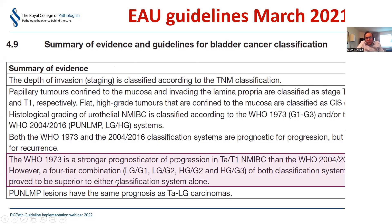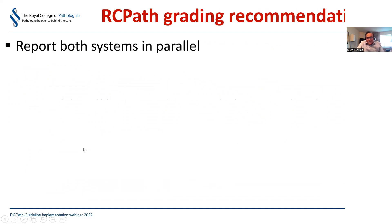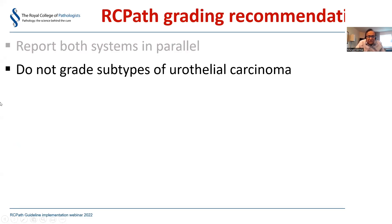The latest EAU states that the 1973 system is a better prognosticator than 2004, but a combined four-tier system using both the 1973 and 2004 classifications together is superior to either alone, providing better patient stratification. Unlike practice in North America, Australia, and India where only WHO 2004 low grade or high grade is reported, we recommend reporting in parallel: the G2 category divided into low grade G2 and high grade G2, and the high grade category into G2 high grade and G3 high grade. Subtypes of urothelial carcinoma like nested should not be graded.